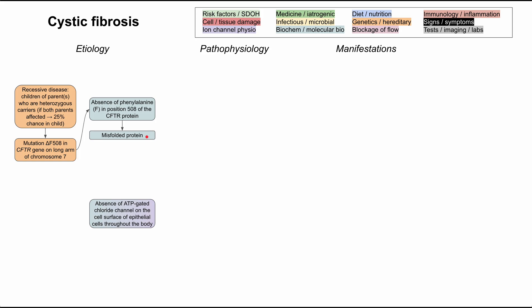Phenylalanine is the amino acid related to this location on the CFTR gene, and when it's missing, the protein does not fold properly. When the protein is misfolded, it gets stuck in the endoplasmic reticulum and is unable to be distributed throughout the body. This mutation results in a defective protein retained in the rough ER that eventually gets degraded, so you're missing this ATP-gated chloride channel that's supposed to be on the cell surface of many epithelial cells throughout the body.